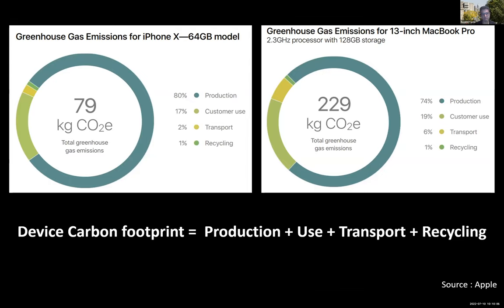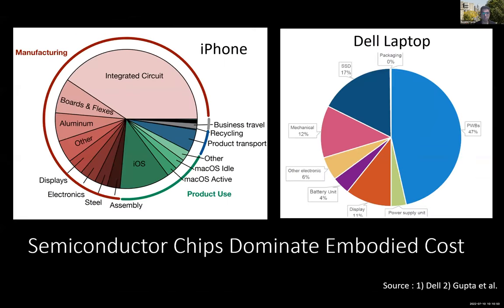The carbon footprint of a computational device comes from four phases: manufacturing, use (electricity consumption), transportation, and recycling. This data is from Apple's iPhone X and 13-inch MacBook Pro, which Apple publishes. What we see is that a majority of carbon comes from the manufacturing or production phase — what we call scope 3 or embodied carbon emissions.